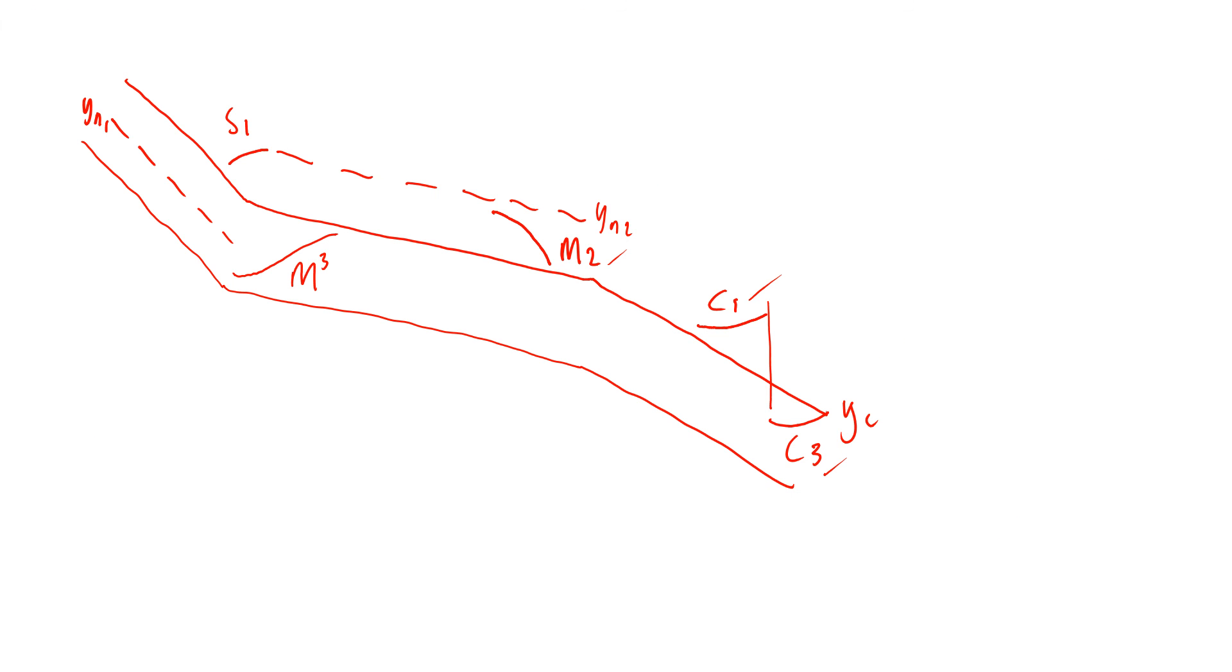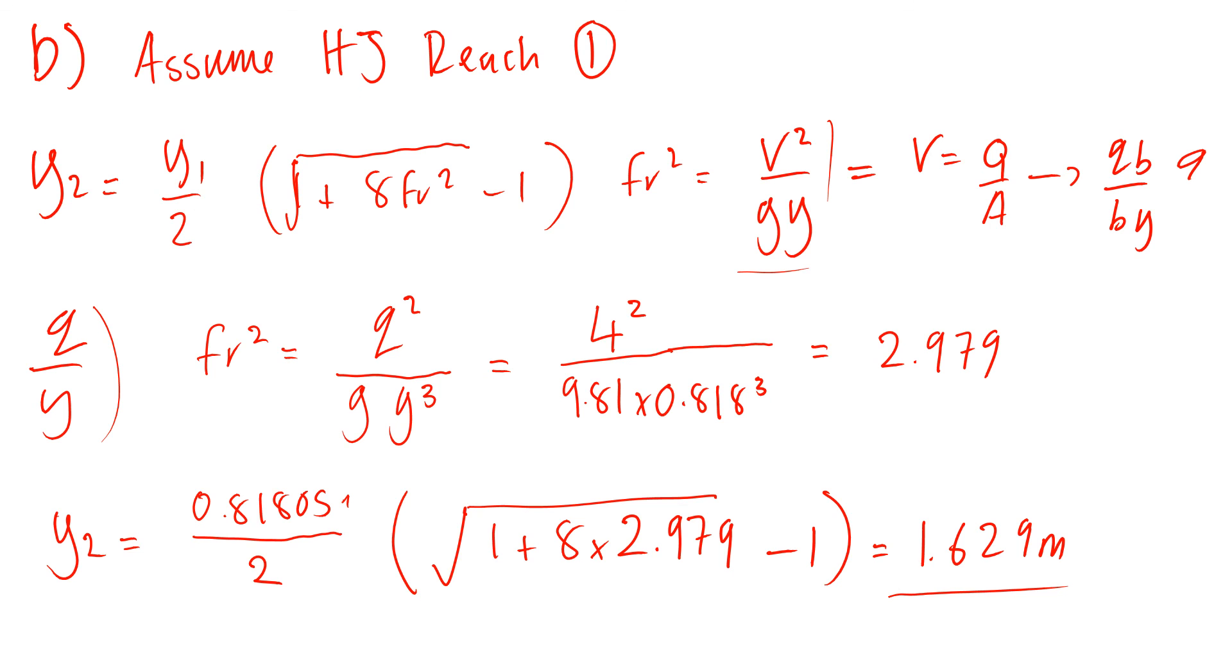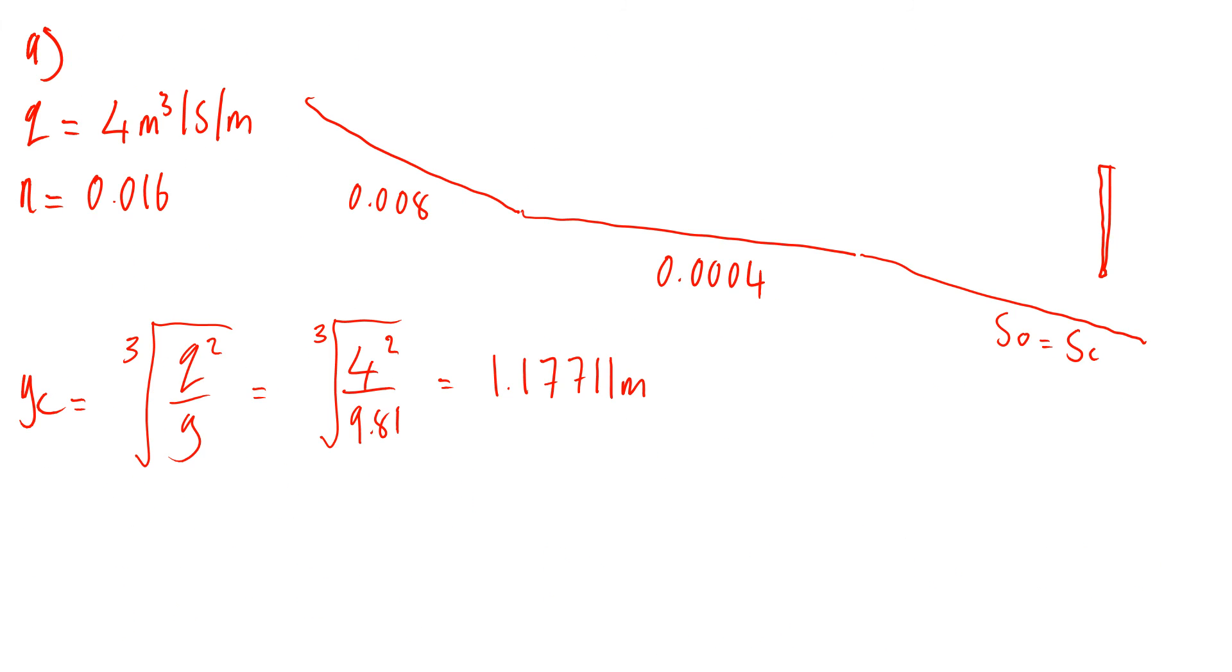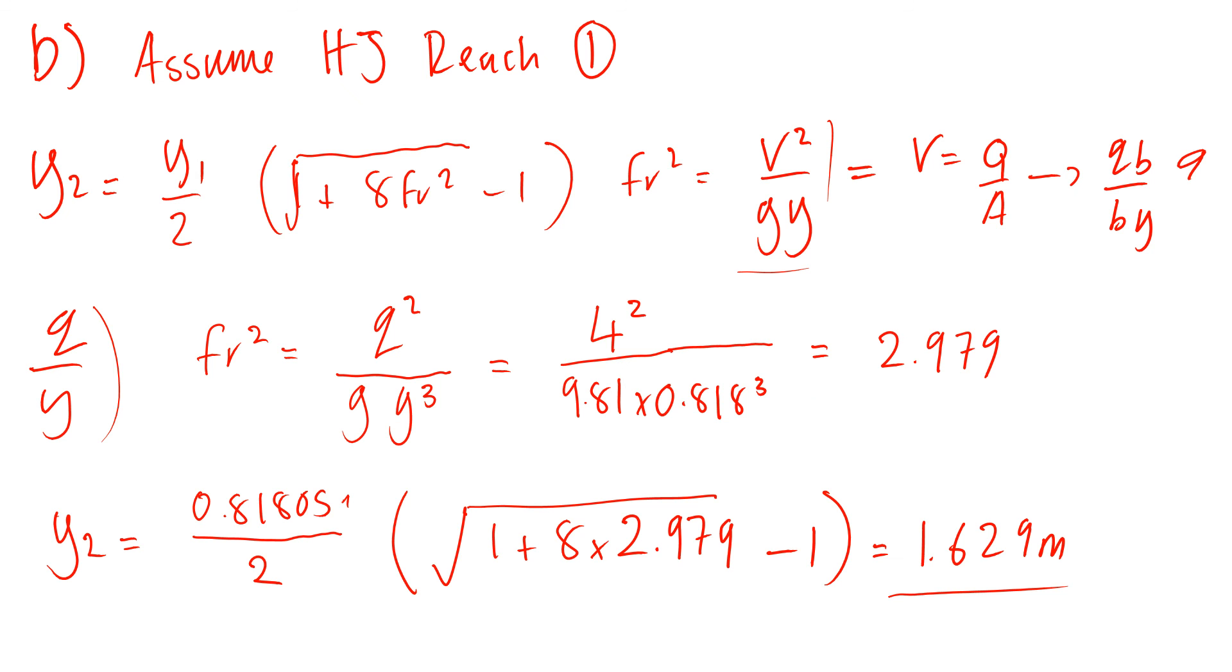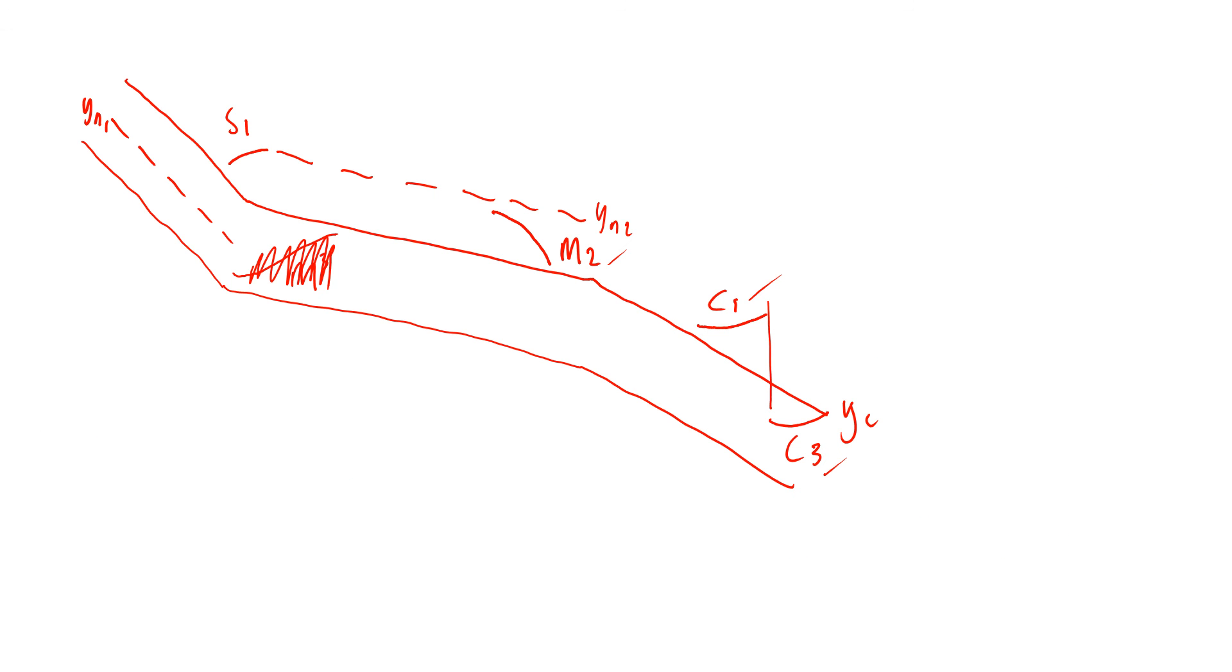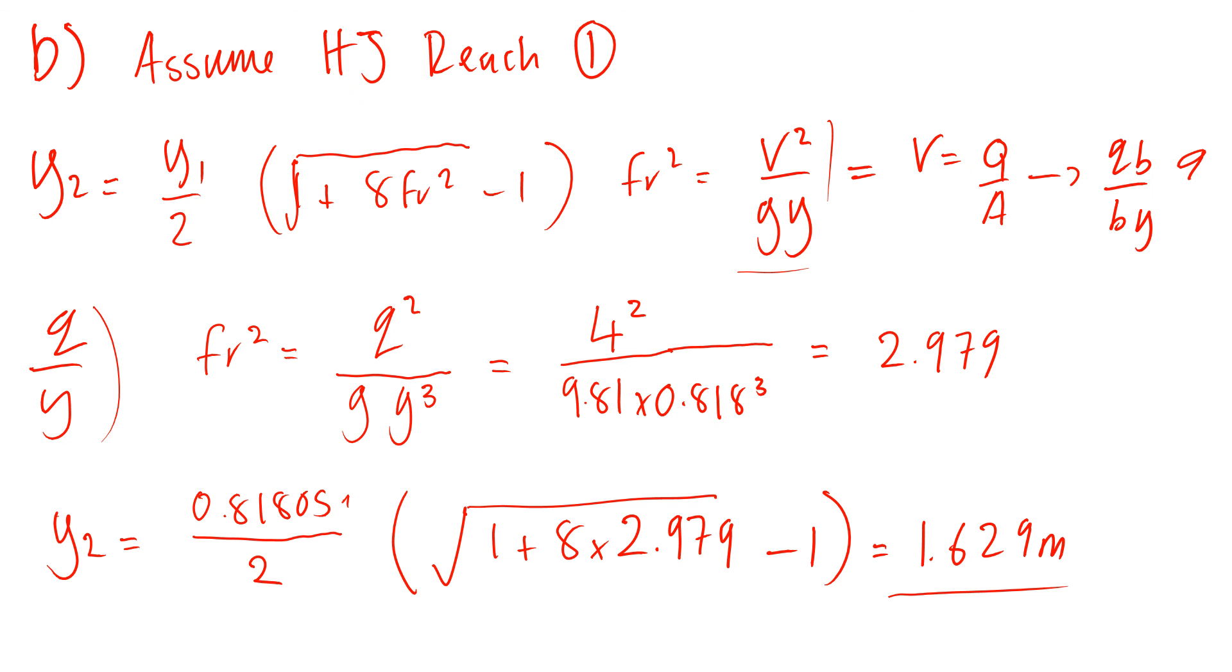So finally I would expect to have a final sketch showing the S1 curve, M2 curve, C1 curve, and C3 curve. So that's the sketch I would expect. And that would give you full marks for that question. Because sometimes students forget to redraw this sketch with the profiles that can actually occur, so an S1 can occur. That's the end of that question, hopefully that's been helpful.